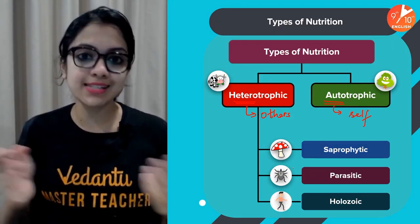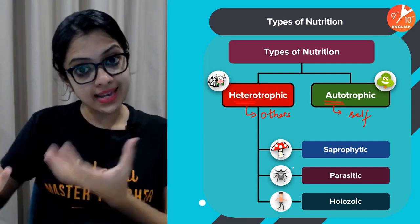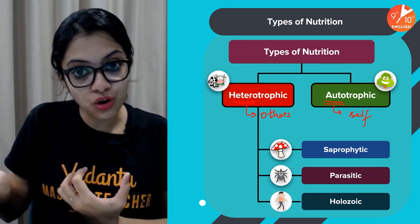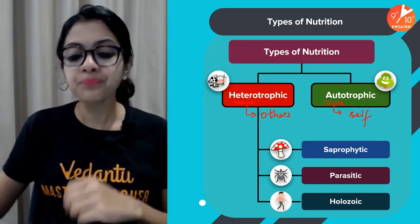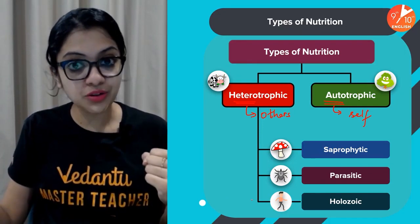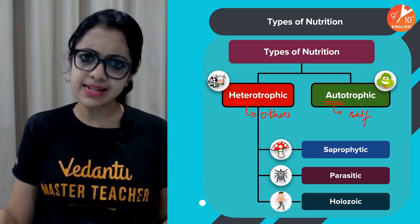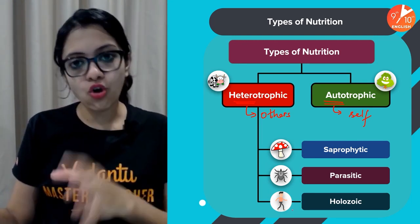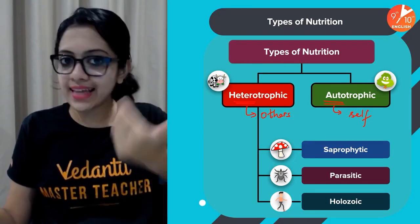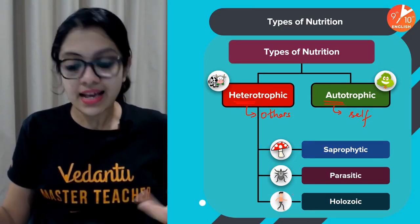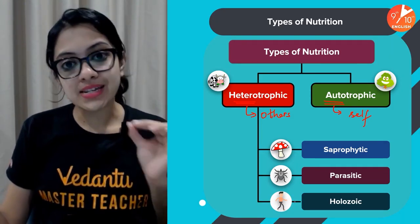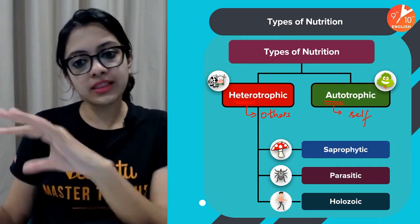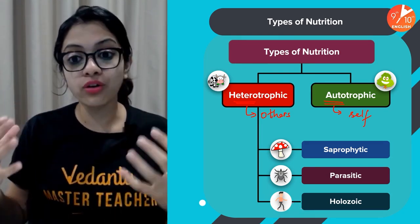Parasitic organisms cling on to a host organism and derive all nutrients from the host without necessarily killing it. They can be ectoparasites — outside the body — or endoparasites — inside the body. The last type of heterotrophic nutrition is holozoic nutrition, for which human beings are a good example, wherein liquid or solid food material is ingested and then intracellular digestion happens. Even simple unicellular organisms like amoeba are an example of holozoic mode of nutrition.